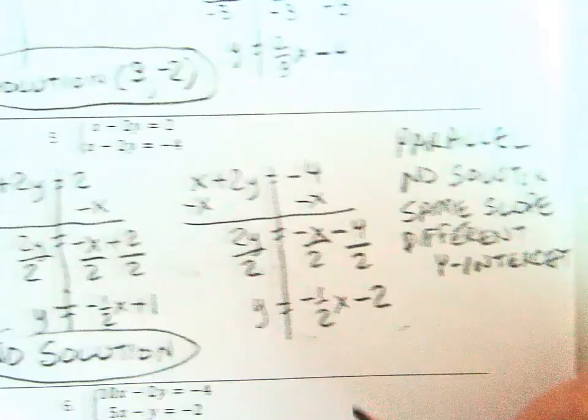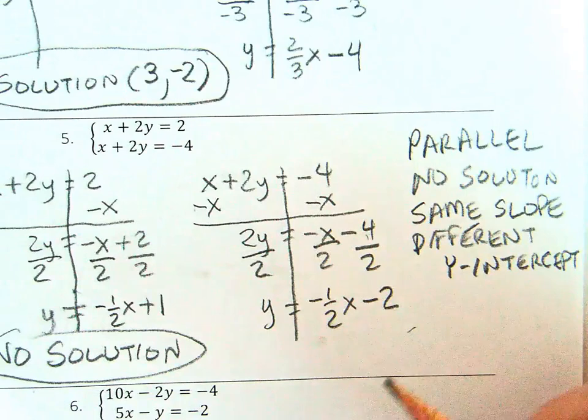A system of parallel lines is called inconsistent because it has no solution.